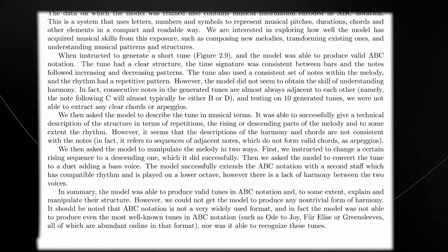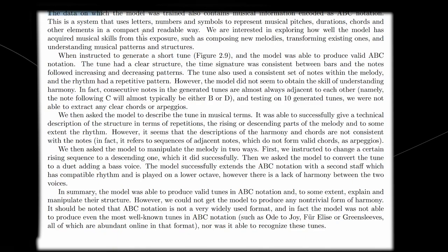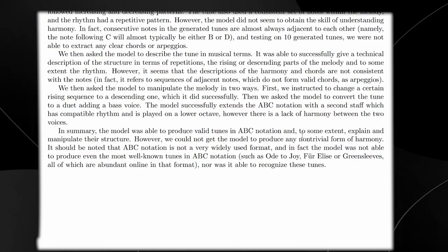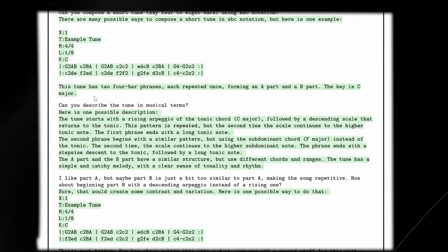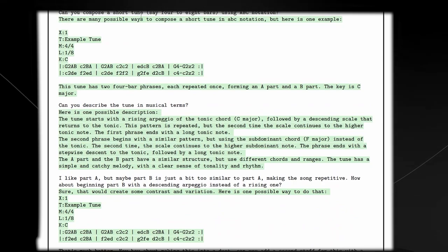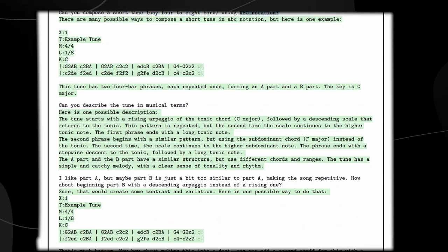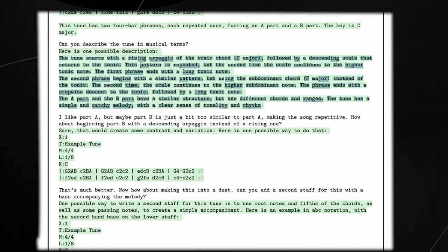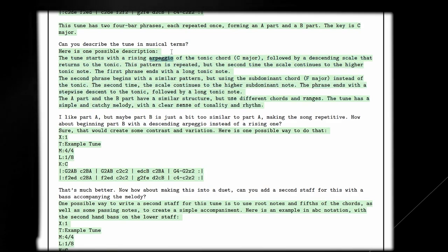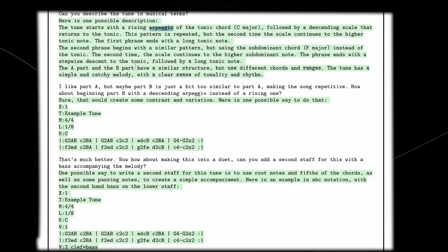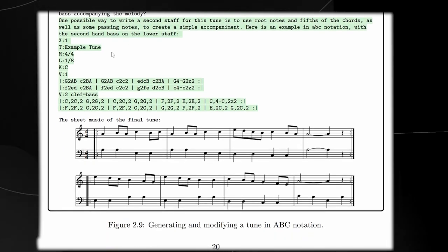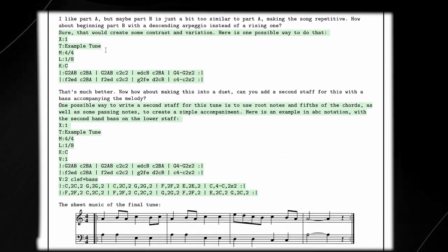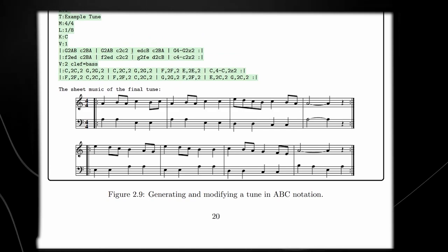What was really cool about GPT-4 discussed in the paper was its ability to create music. In summary, the model was able to produce valid tunes in ABC notation, and to some extent explain and manipulate their structure. GPT-4 is able to compose a short tune, say 4 to 8 bars, using ABC notation. It's describing the tune in musical terms and able to describe exactly how this tune sounds. It's a really cool revelation that GPT-4 is actually able to create music in such a short space of time, which leads me to believe that the further models, perhaps GPT-5, are going to be able to do a lot more things.